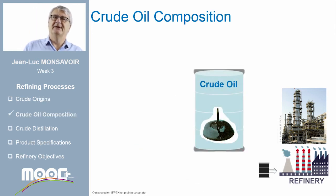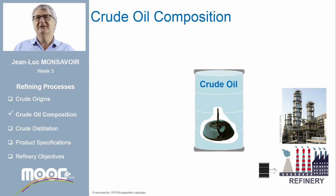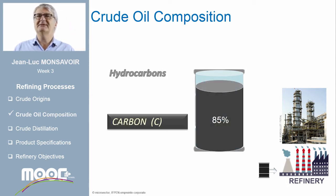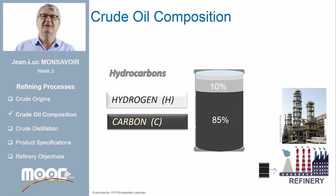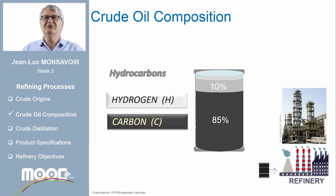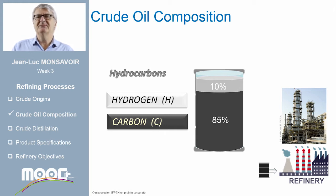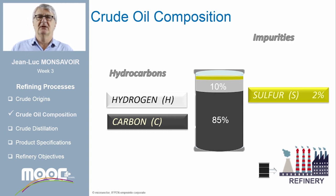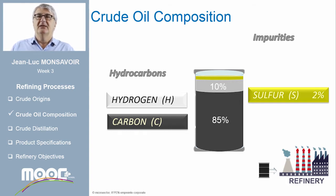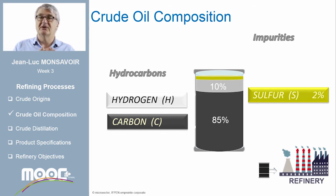Let's start with the raw material of a refinery: the crude oil. In a barrel of crude, you have approximately 85% carbon elements plus 10% hydrogen. The barrel of crude is composed mainly of hydrocarbons, up to 95% consisting of carbon and hydrogen. The other 5% are called impurities. On average, after the first treatments and depending on the crude origin, we find approximately 2% of sulfur compounds. The sulfur level of a crude is the key parameter for crude selection and crude prices.